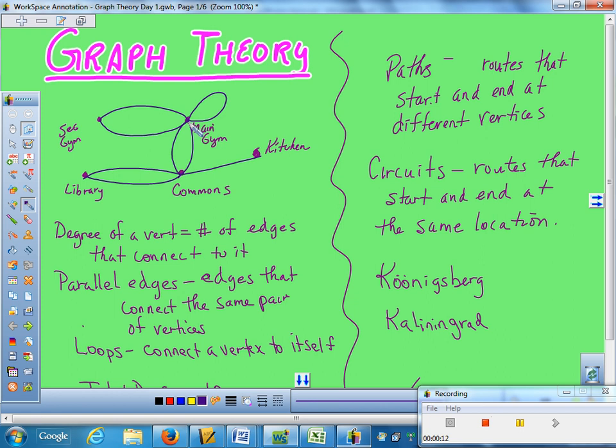Are there any other loops we could draw? Well, you could argue that the airlock up here by the front of the commons where you come in the main doors, you can go out the airlock, back in the airlock, so you could also call that a loop. And there you have a possible graph theory diagram of this school based on vertices and edges.